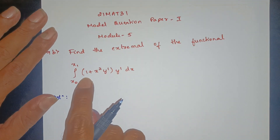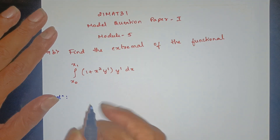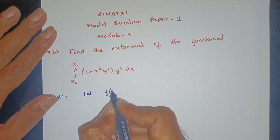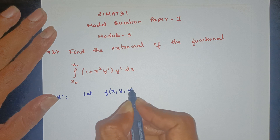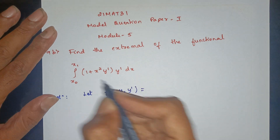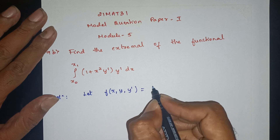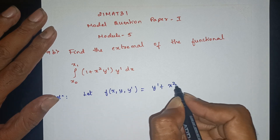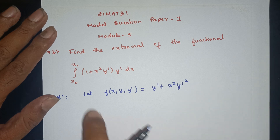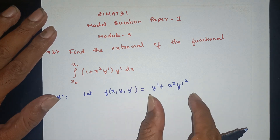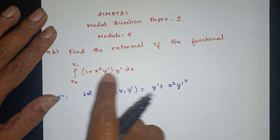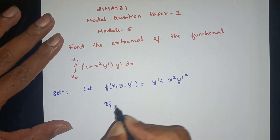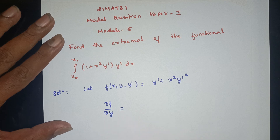First, let f(x, y, y') be defined. f(x, y, y') is equal to (1 + x²)(y')², which expands to y'·y' + x²·y'·y', giving (y')² + x²(y')². Now differentiate f with respect to y partially: ∂f/∂y.